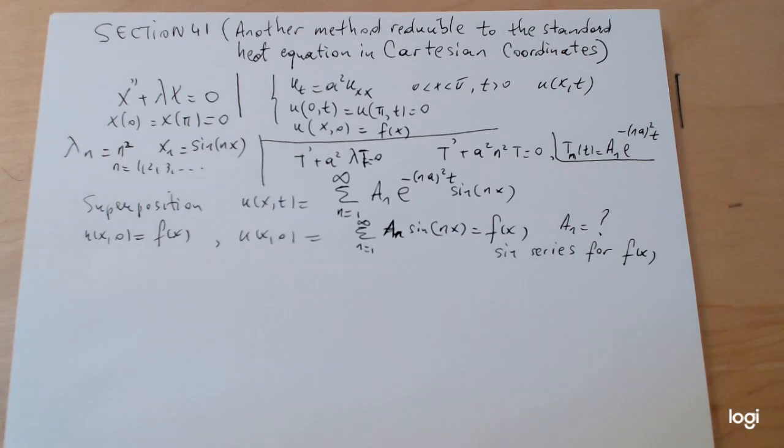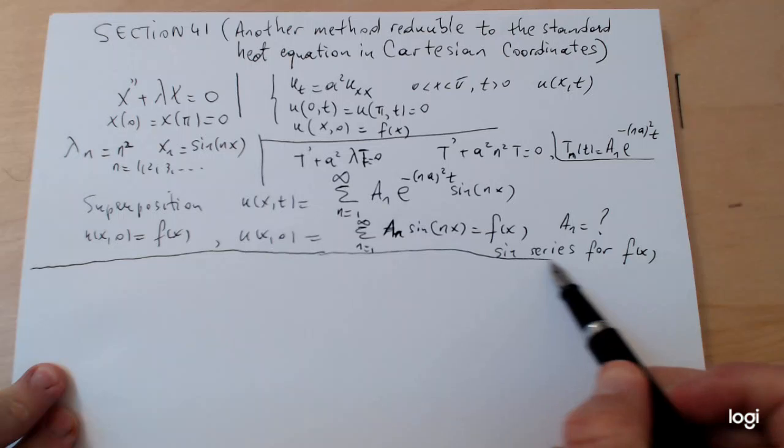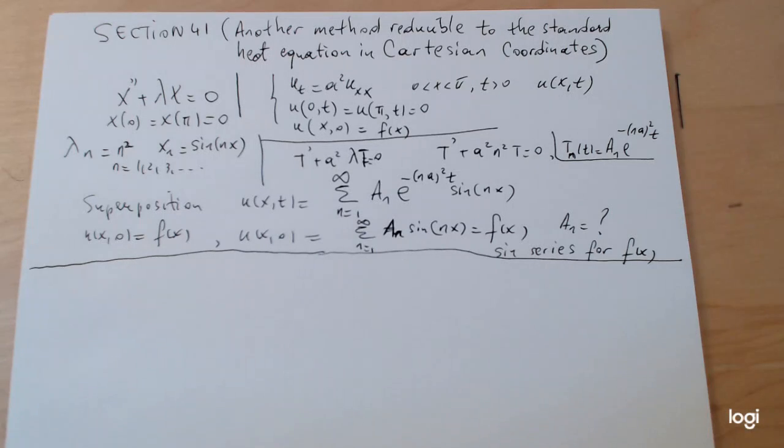That was just a refresher. Section 4.1 gives you a little trick on how to actually reduce a problem which is not stated in Cartesian coordinates but can be reducible to a problem in Cartesian coordinates.